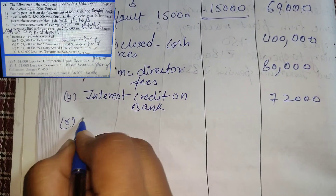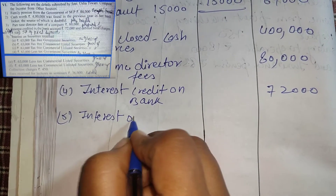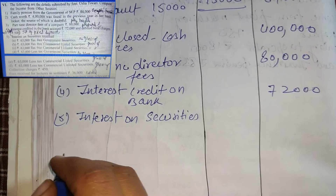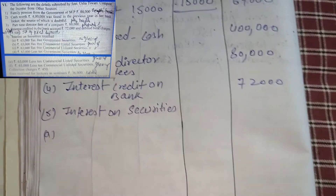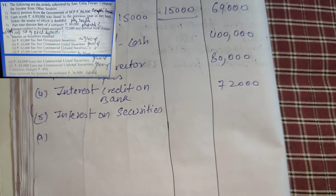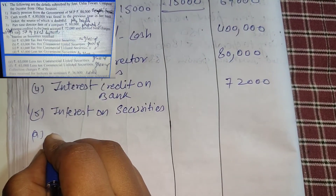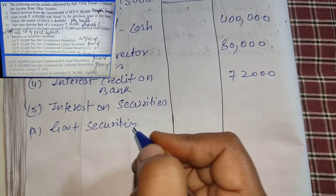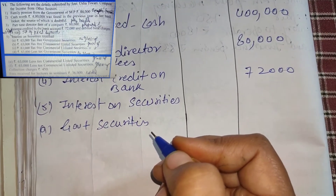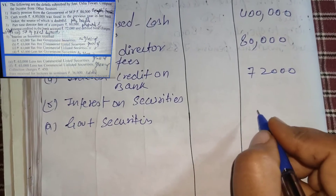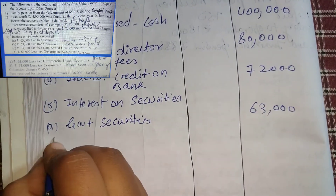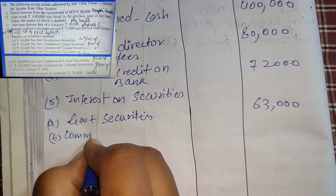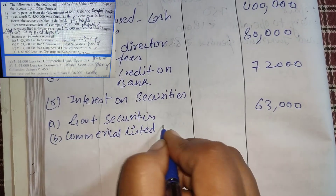Interest on securities received — very important point to remember. If there are government securities, there is no gross-up. Tax-free government securities: we write directly — no gross-up. We write 63,000 directly. Next: 63,000 tax-free commercial listed securities — commercial listed securities are grossed up.